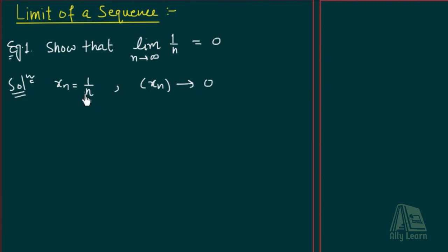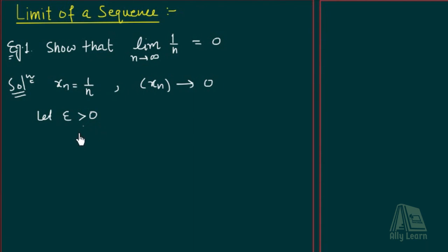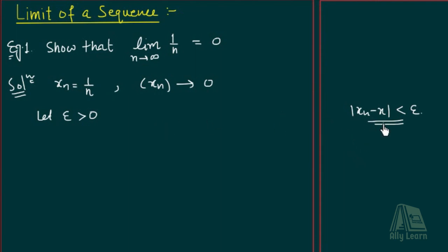Ab dekhte hain kaisi karayang hai. Ab definition remind karayi hai — usme kya tha: for every epsilon greater than 0. So sabse pahle hamne kya karna hai: let epsilon greater than 0. Ab iske corresponding hamne ek natural number find out karna hai. That is, |xn minus x| ko less than epsilon karna hai hamne. So in the next step, we will consider xn minus x.